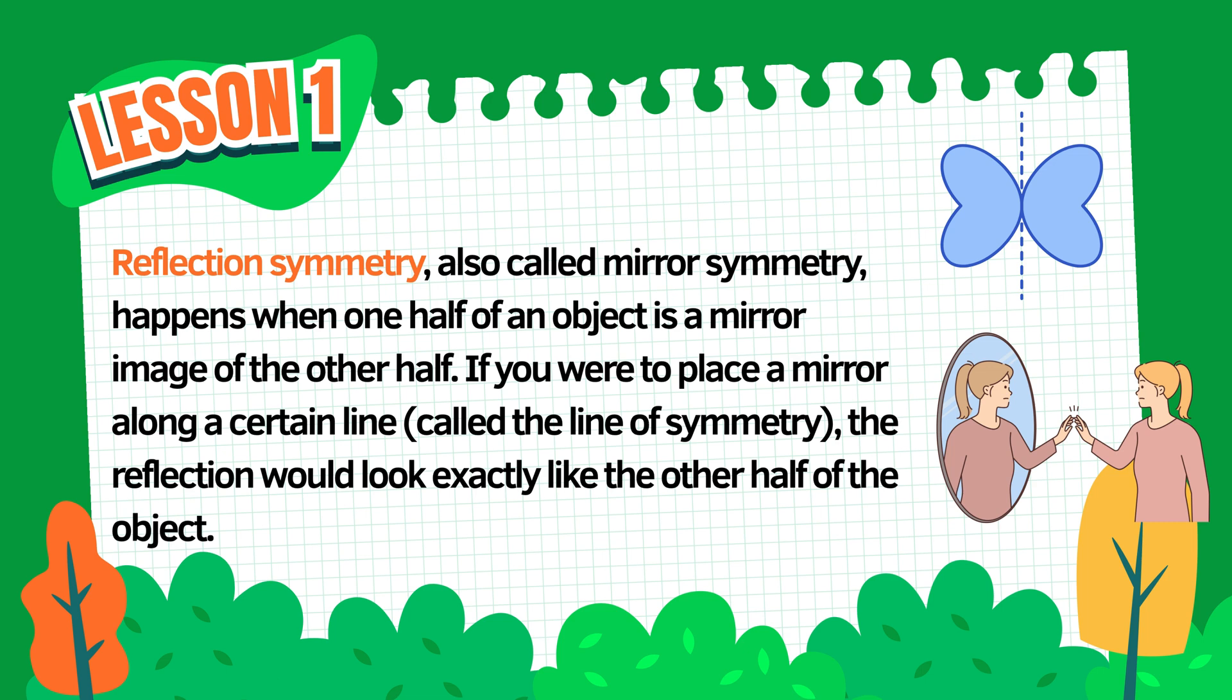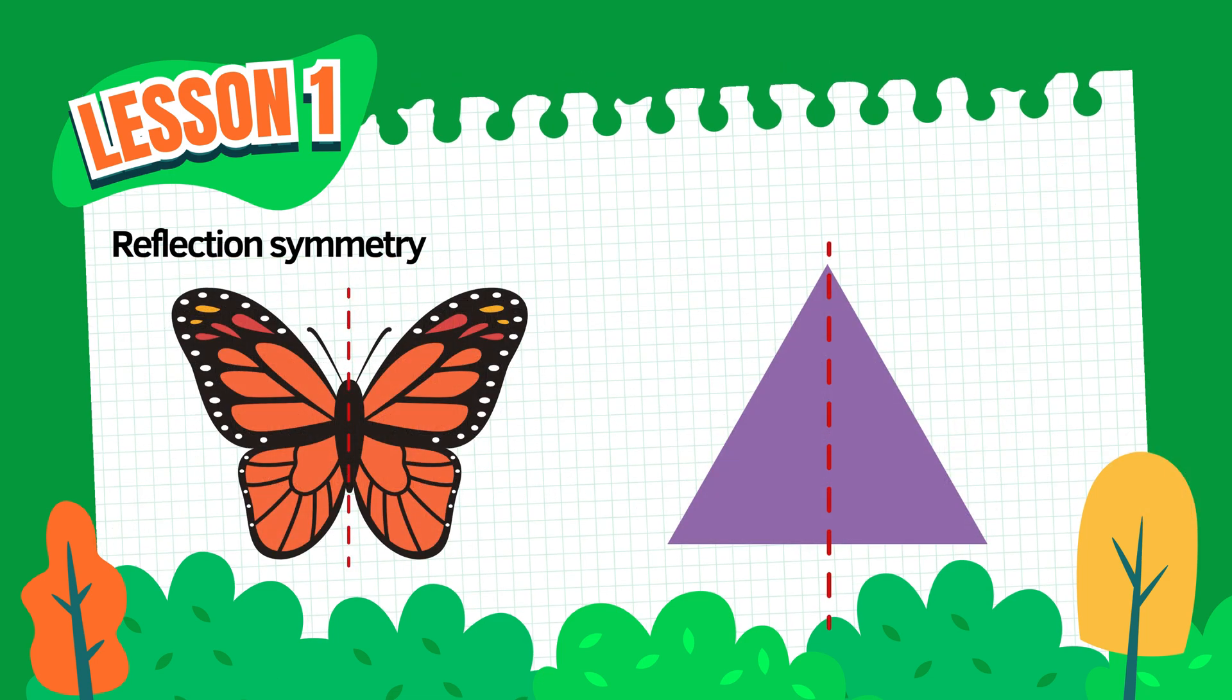Imagine placing a mirror right in the middle of the object along an invisible line called the line of symmetry. If both sides match exactly, then the object has reflection symmetry. For example, look at this butterfly.